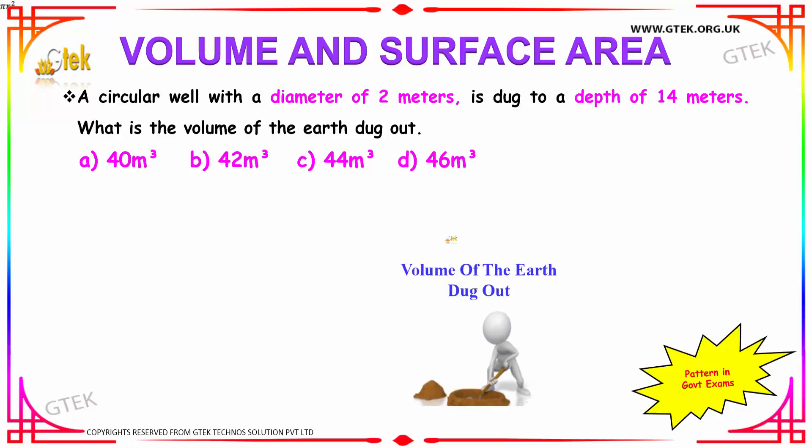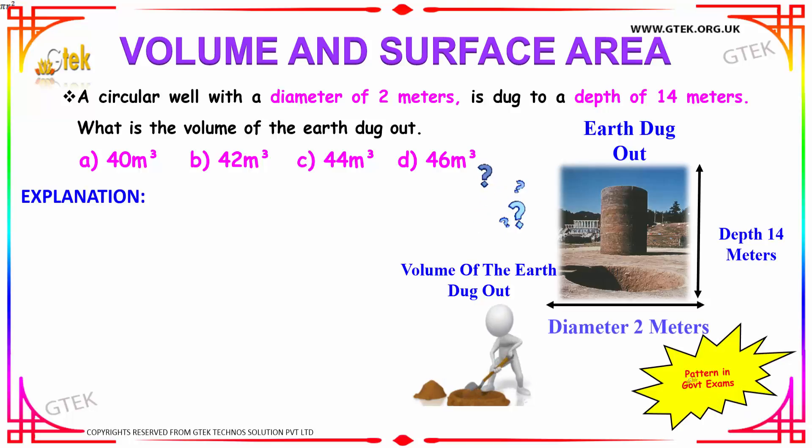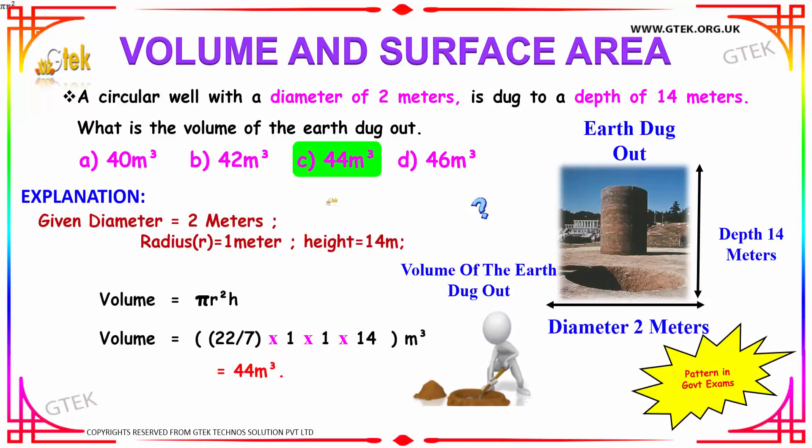Moving on to our next interesting example—this has appeared in government exams, so please take note. We have a circular well which is dug out from the earth, and the diameter of the well is 2 meters and the depth is 14 meters.